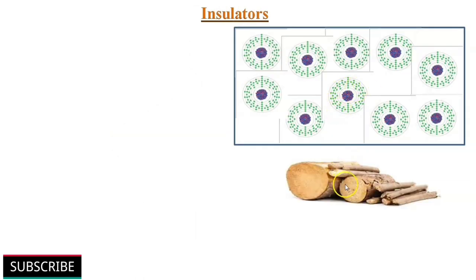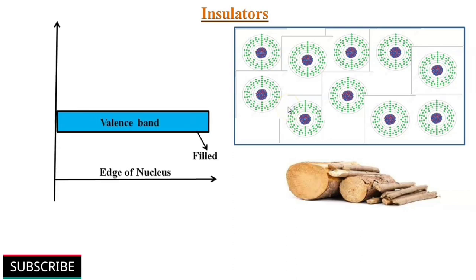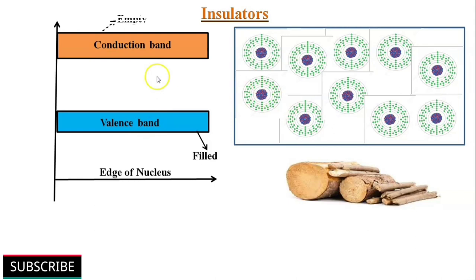In insulators like wood, there are no free electrons available. So they are unable to pass electricity through them. In terms of energy band, the valence band is full, while the conduction band is empty. The energy gap between valence and conduction band is very large. Therefore, a very high electric field is required to make valence electrons as free electrons.